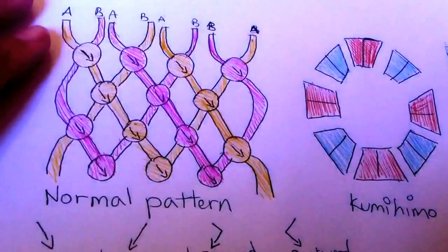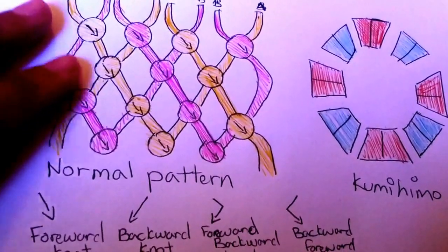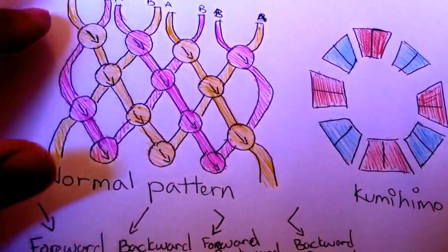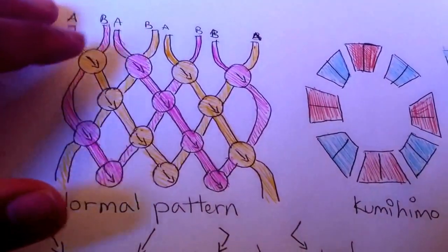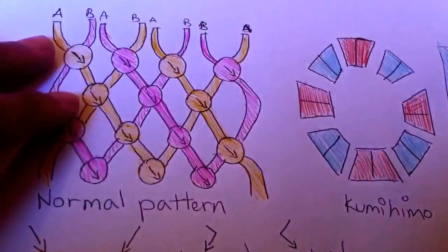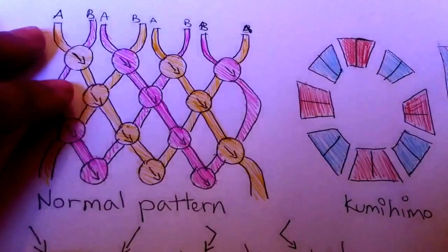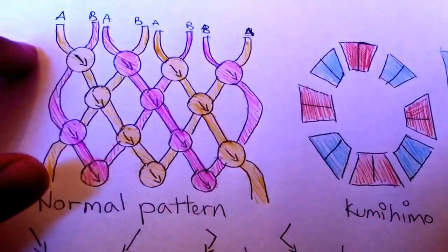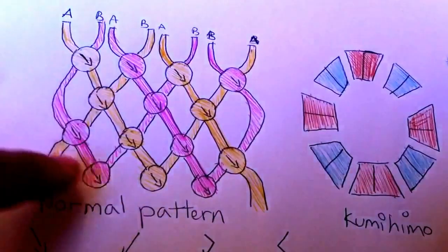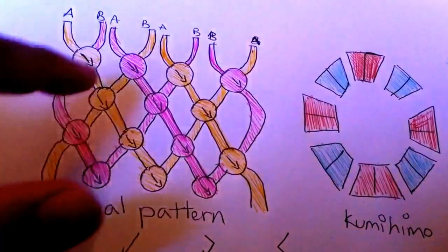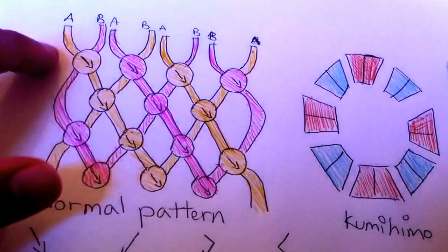I'd like to show you how to read a normal pattern first, and the first thing you want to look at is your letters. It can range from A to Z, and it will have as many colors as there are in the pattern. For example, this one has two colors, so A is this orange color, and B is this pink color.